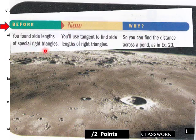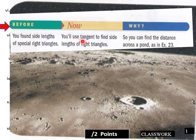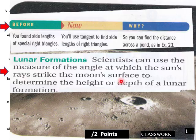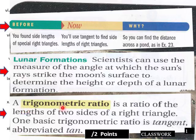Then you found side lengths, the special right triangles. You'll use tangent to find the side lengths of right triangles. This is the moon's surface here. Determine the height or depth of a lunar formation. A trigonometric ratio is a ratio of the lengths of two sides of a right triangle. One basic trigonometric ratio is the tangent.